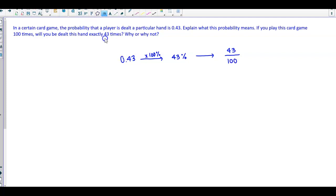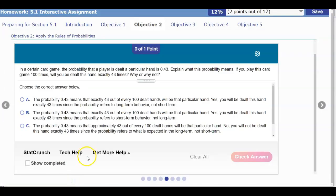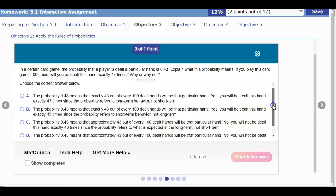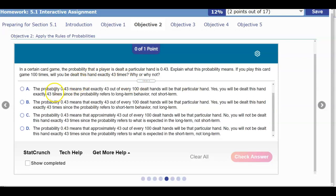Now what they're saying here is if you play this card game 100 times, will you be dealt this hand exactly 43 times? Well, no, it's not according to the lecture, right? It doesn't mean exactly, but it means approximately. So the probability of 0.43 means that exactly is not true, neither of those, because it's not exactly.